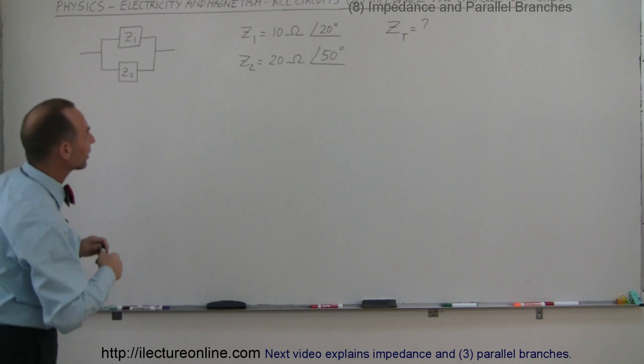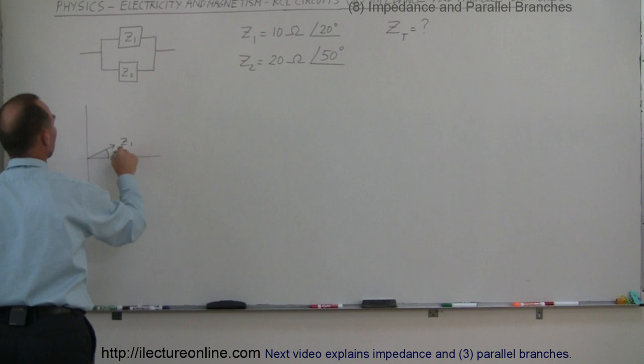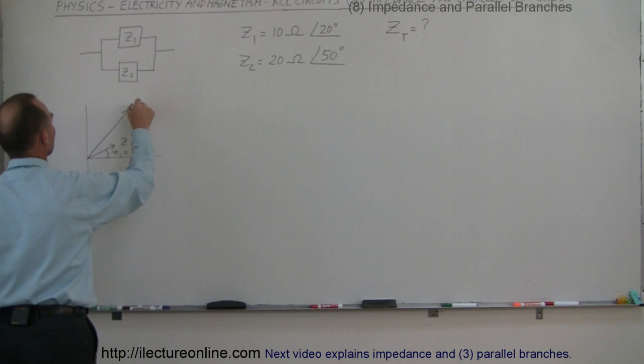To get a better picture of what that looks like, let's go ahead and draw that on a phasor diagram. Here we have the first impedance Z1 at an angle theta-1 of 20 degrees, and then we have Z2 at an angle theta-2 of 50 degrees.